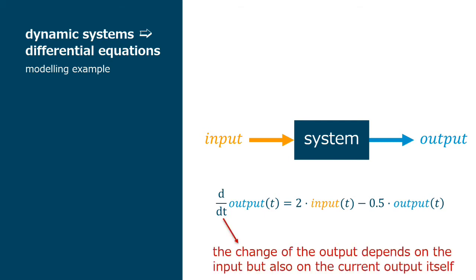In this model, we can read that the change of the output with time t is dependent of the input signal, as in the previous example, but now also dependent on the output itself.